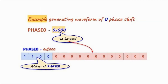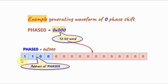Next, we program the phase shift register so that we have a waveform with 0 phase shift. Phase shift register 0 has a 12-bit value of all zeros. The 16-bit number sent to the device is made of the 4 most significant bits as the address of phase shift register 0, and the remaining 12 bits as the phase shift value itself.